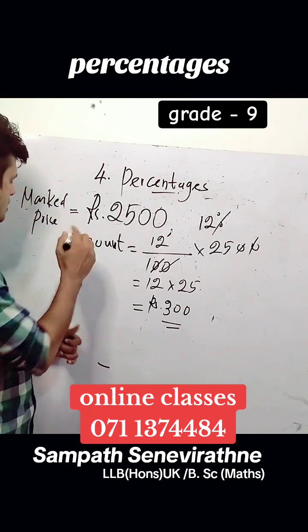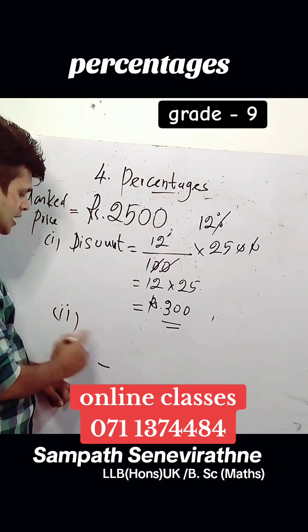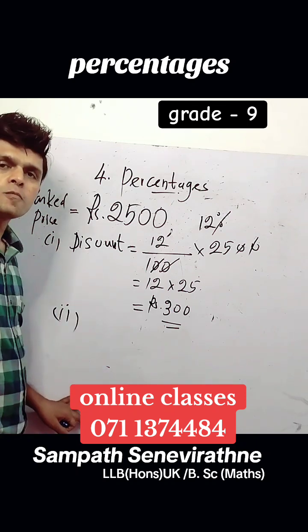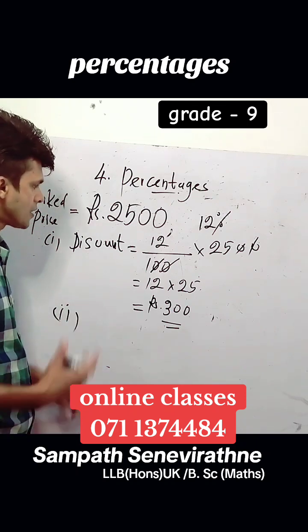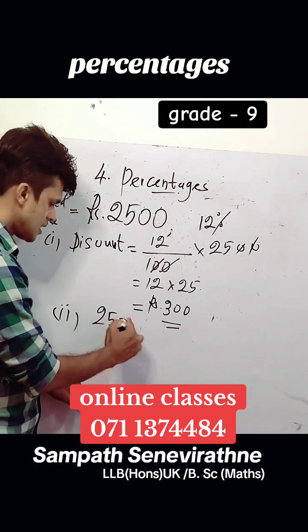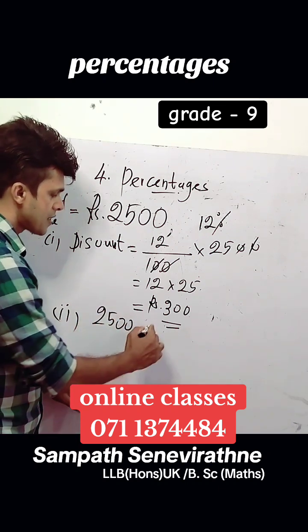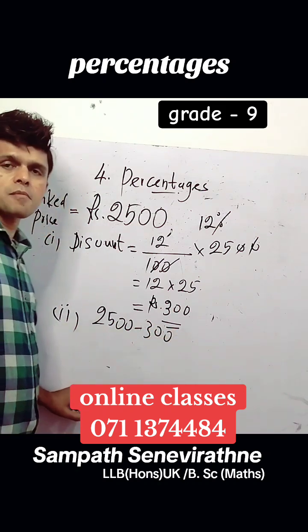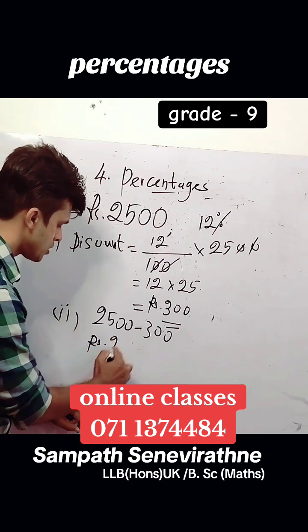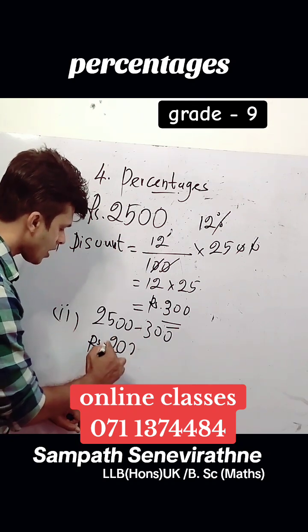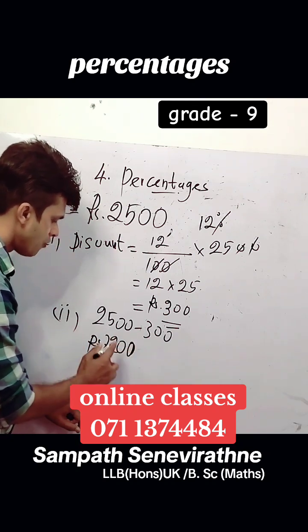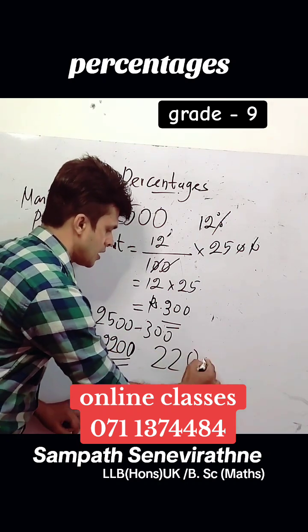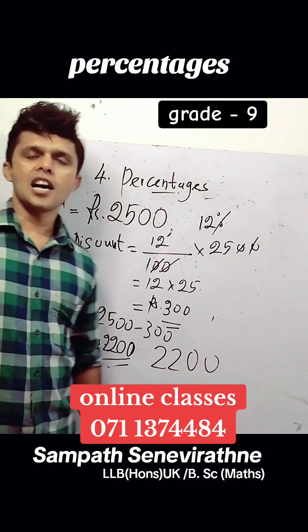The second question is the value at which you could buy this article at the market. That is calculated as 2500 minus 300, which equals 2200 rupees. This is the selling price of that article — 2200 rupees.